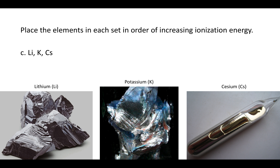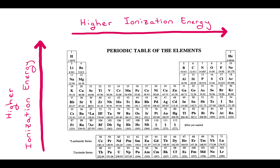What if you had lithium, potassium, and cesium? How would you list those in order of increasing ionization energy? Lithium is there, potassium is beneath it, cesium is beneath that. Because cesium is the lowest down, it has the lowest ionization energy.